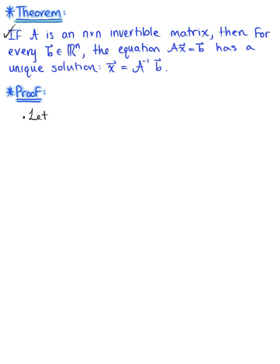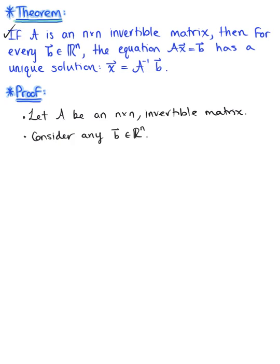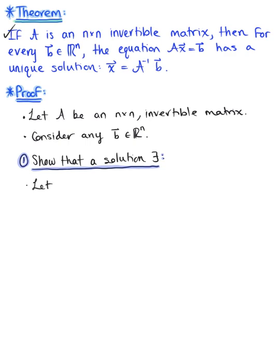To get us started, we let A be an n by n invertible matrix. We also consider any vector b in Rn. The first thing we want to do is show that a solution exists. So we let vector x be defined as the inverse of matrix A multiplied by vector b, and we want to show that this vector x is in fact a solution to the non-homogeneous equation.